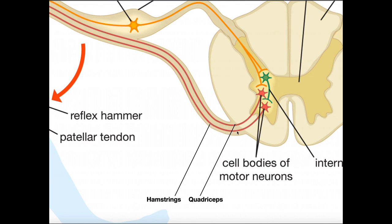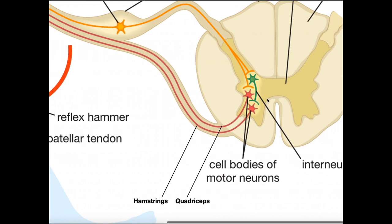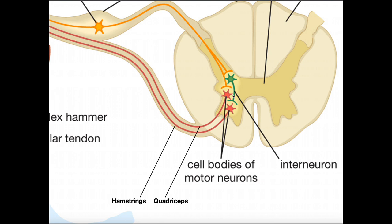How then do we get the hamstrings to relax? Instead of the branch from the sensory neuron synapsing directly with the hamstrings motor neuron, there's an interneuron here. This interneuron in green is an inhibitory interneuron. So when the sensory neuron branch excites the inhibitory interneuron, that inhibitory interneuron can then in turn inhibit the motor neuron going to the hamstrings, leading to relaxation of the hamstrings.